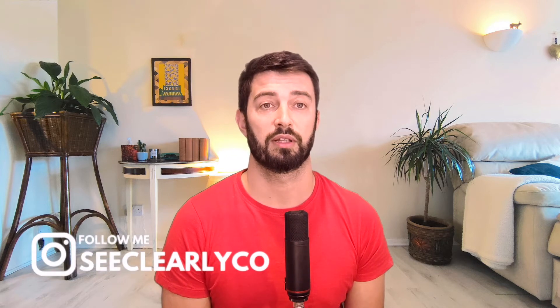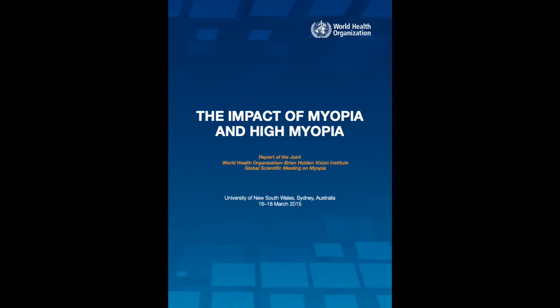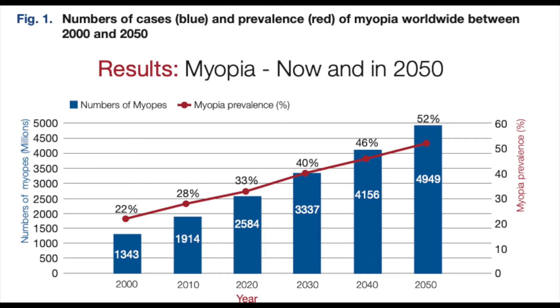To begin, myopia is defined as having eyesight that's worse than minus 0.5 diopters. Here I'm going to bring up a screenshot of a document published by the WHO, entitled 'The Impact of Myopia and High Myopia.' In this document they detail estimations of the prevalence of myopia throughout the world. In 2020, 33% of the world's population — almost 2.6 billion people — are estimated to be myopic.